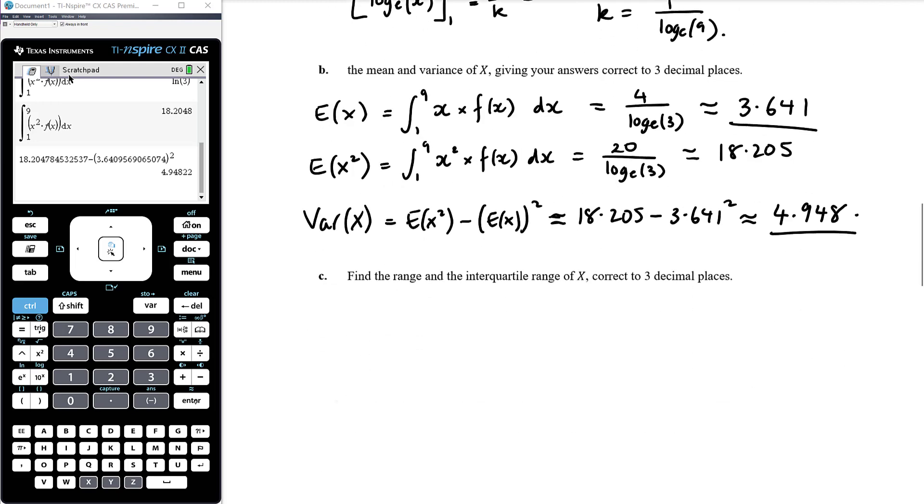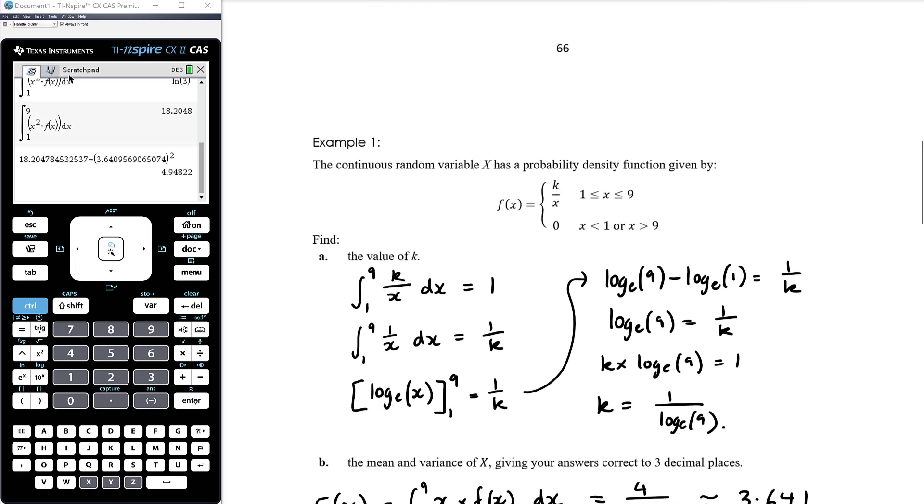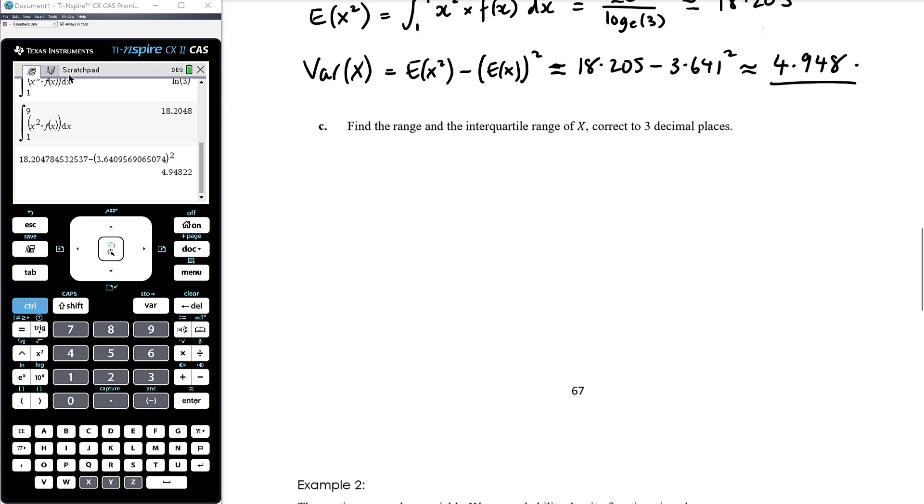Find the range and the interquartile range of x correct to three decimal places. OK, so the range is just the largest x value is nine and the smallest x value is one. OK, so the range is just going to be eight.